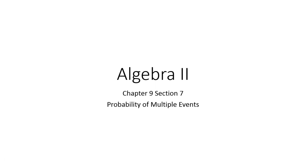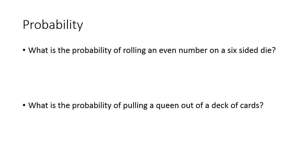The last section in chapter 9 is section 7, dealing with the probability of multiple events. We've been dealing with rational functions for all this time, and now we're going to be dealing with a quick section on probability kind of thrown in there.